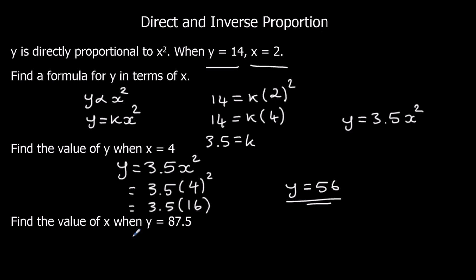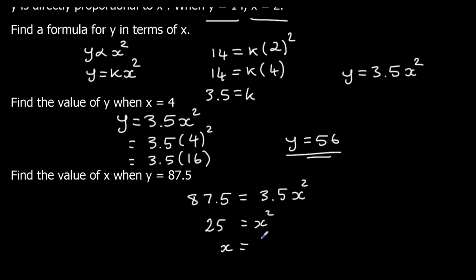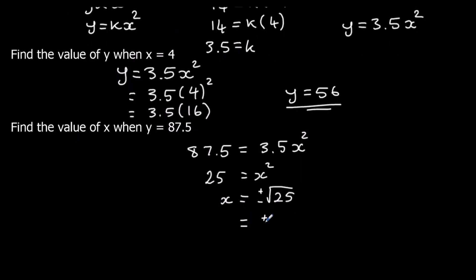Find the value of x when y equals 87.5. We substitute y into the formula: 87.5 equals 3.5x squared. We get x squared by itself first — 87.5 divided by 3.5 gives us 25. So x squared equals 25. Then we square root both sides to get x by itself, which gives us plus or minus 5. The square root of 25 is plus or minus 5, because 5 times 5 is 25 and negative 5 times negative 5 also makes 25.